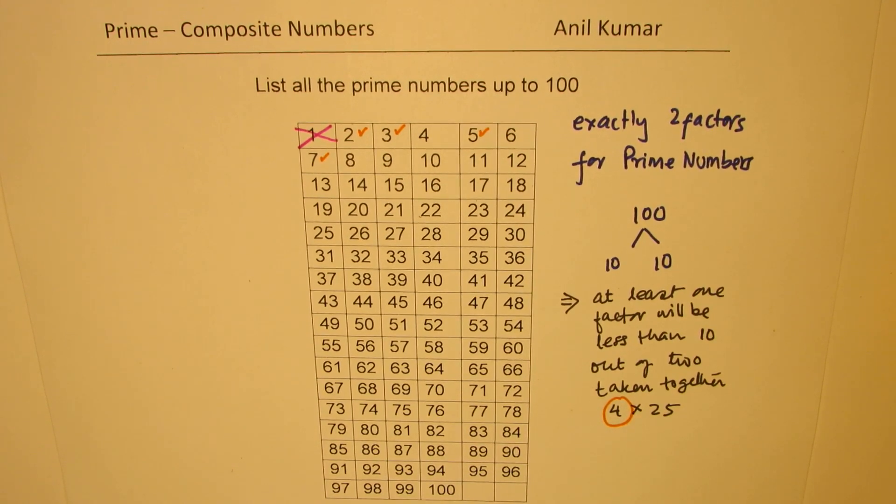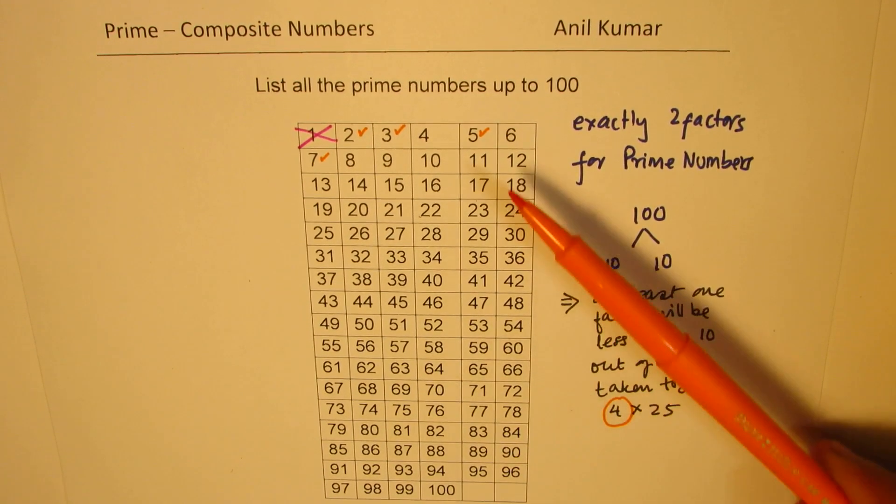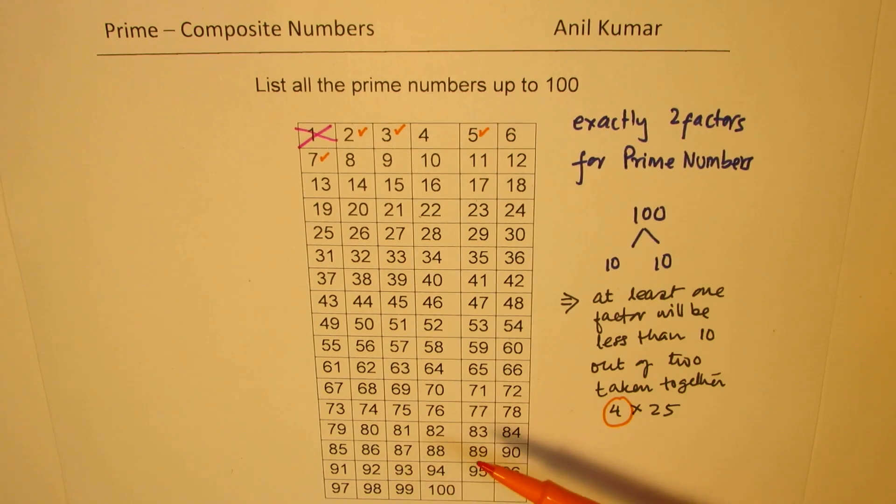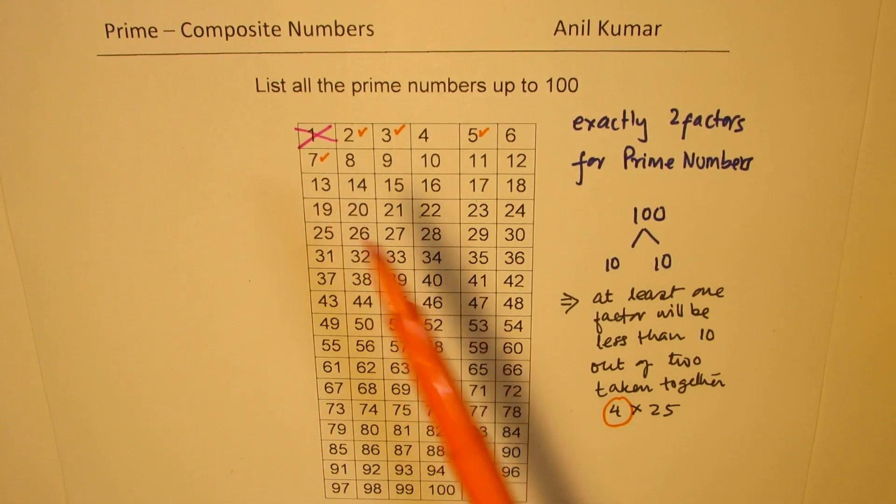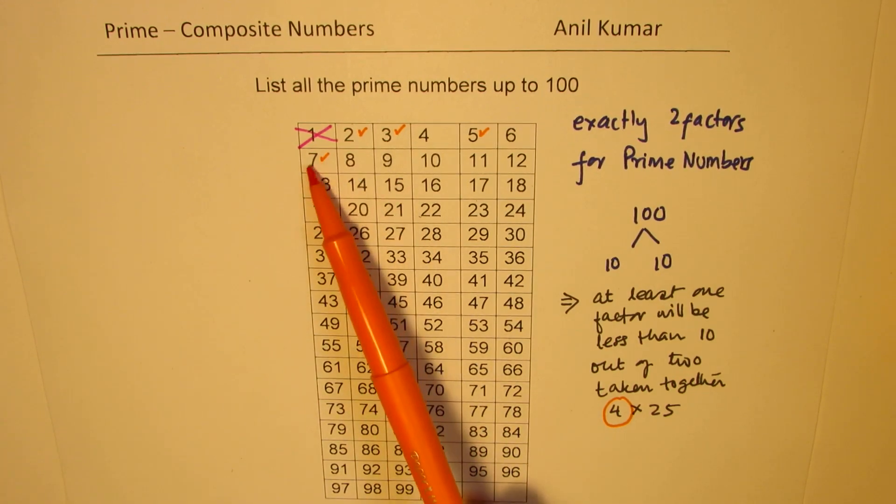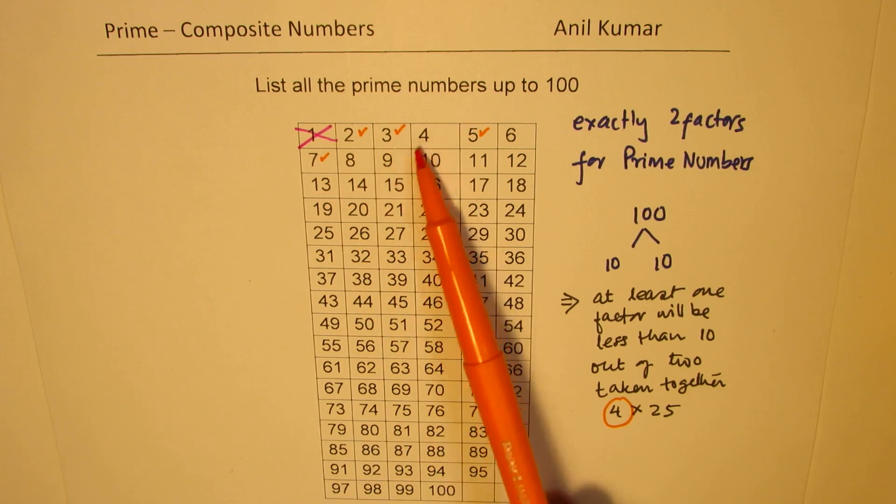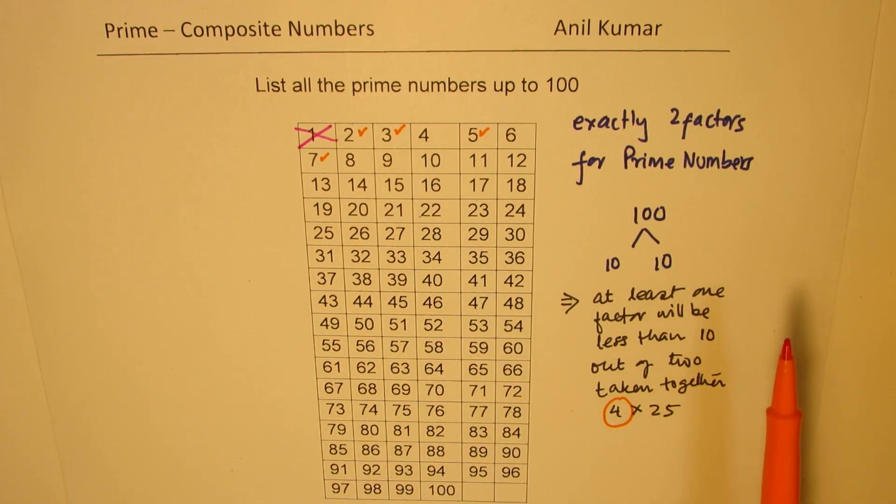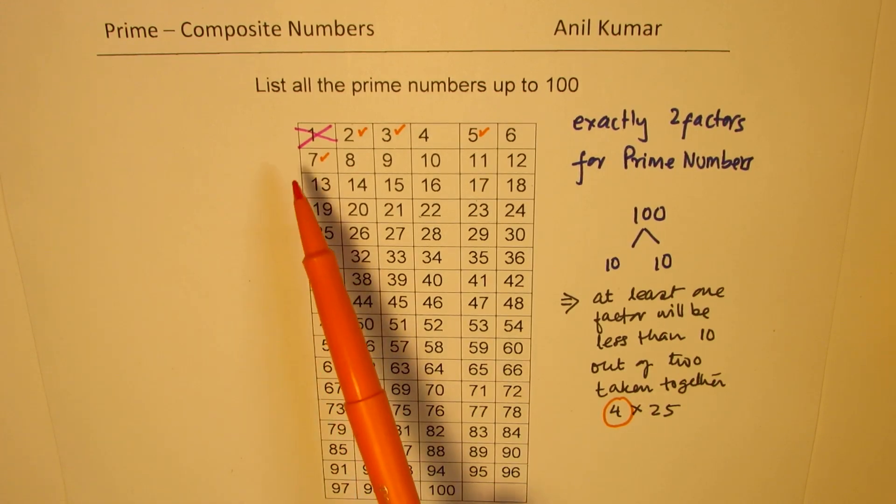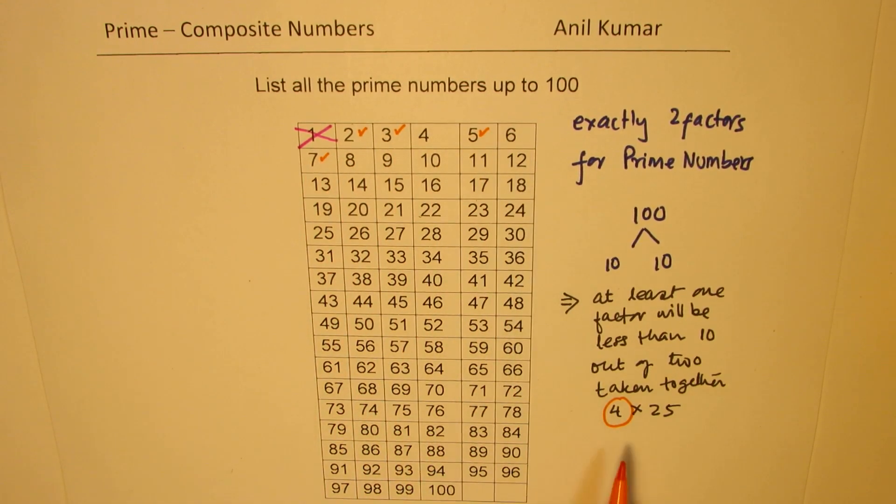So the idea here is that all these numbers, if they are composite numbers, then numbers which are prime numbers less than 10 will be divisors of those. That is the whole idea. So that is why we only consider the prime numbers below 10 to work out the technique.